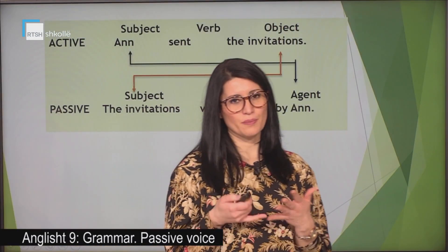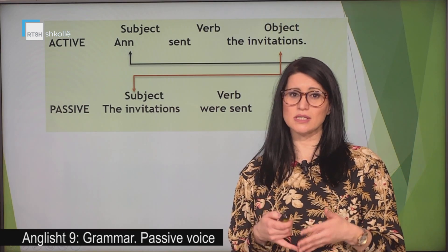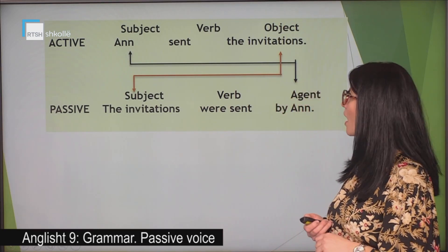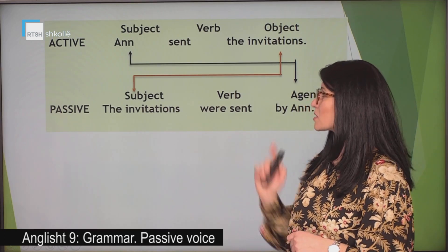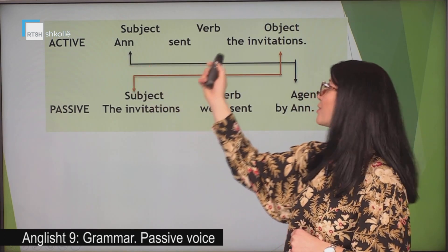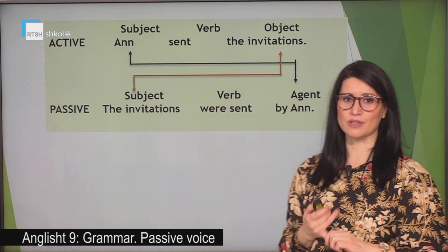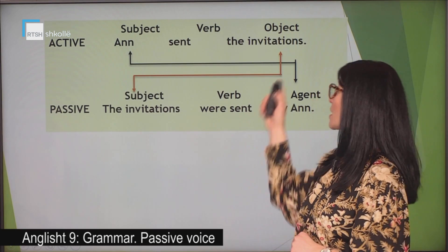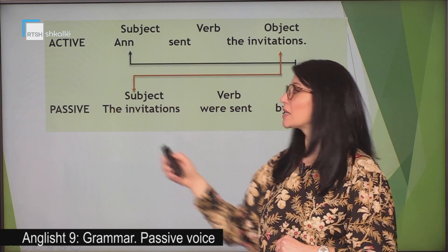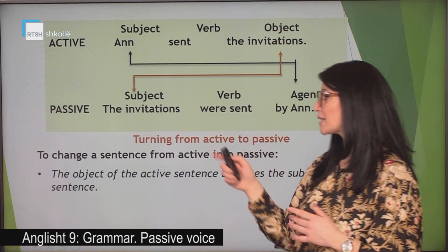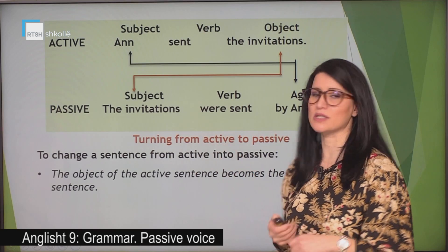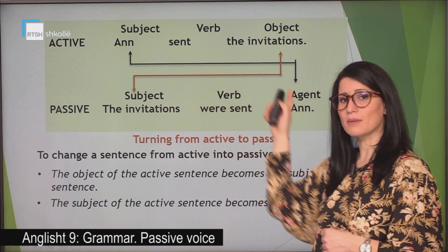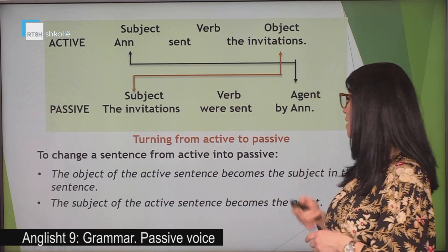Here we have how the passive is formed again and the changes that we have in a sentence to transform it from active to passive. Have a look at the sentence: Ann sent the invitations. This sentence is in the active — Ann is the subject, the verb is 'sent', and the object is 'the invitations'. Have a look at the sentence in the passive: the invitations were sent by Ann. The object of the active sentence is transformed into the subject of the passive sentence — here it is: the invitations. We start the sentence with 'invitations'.